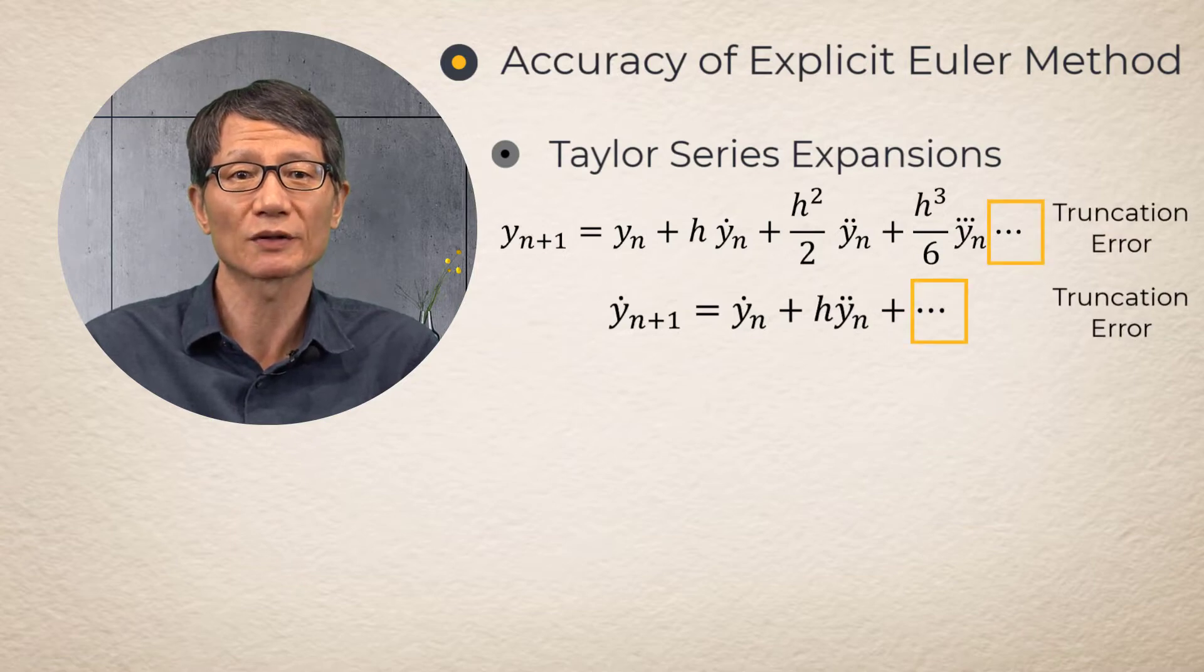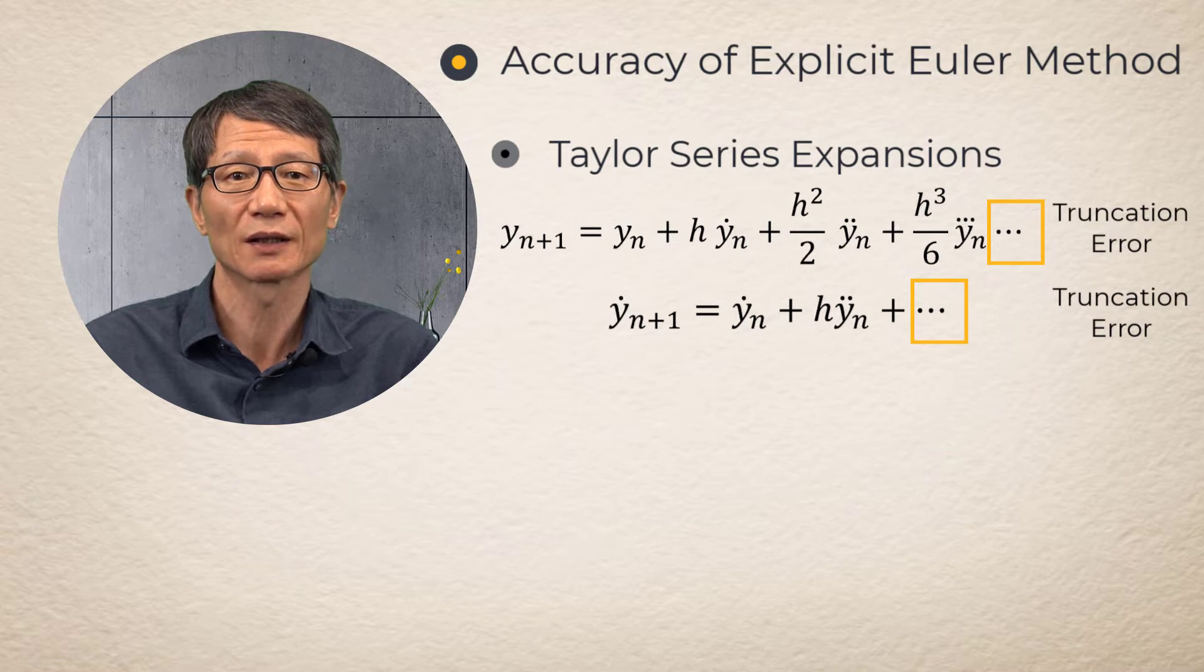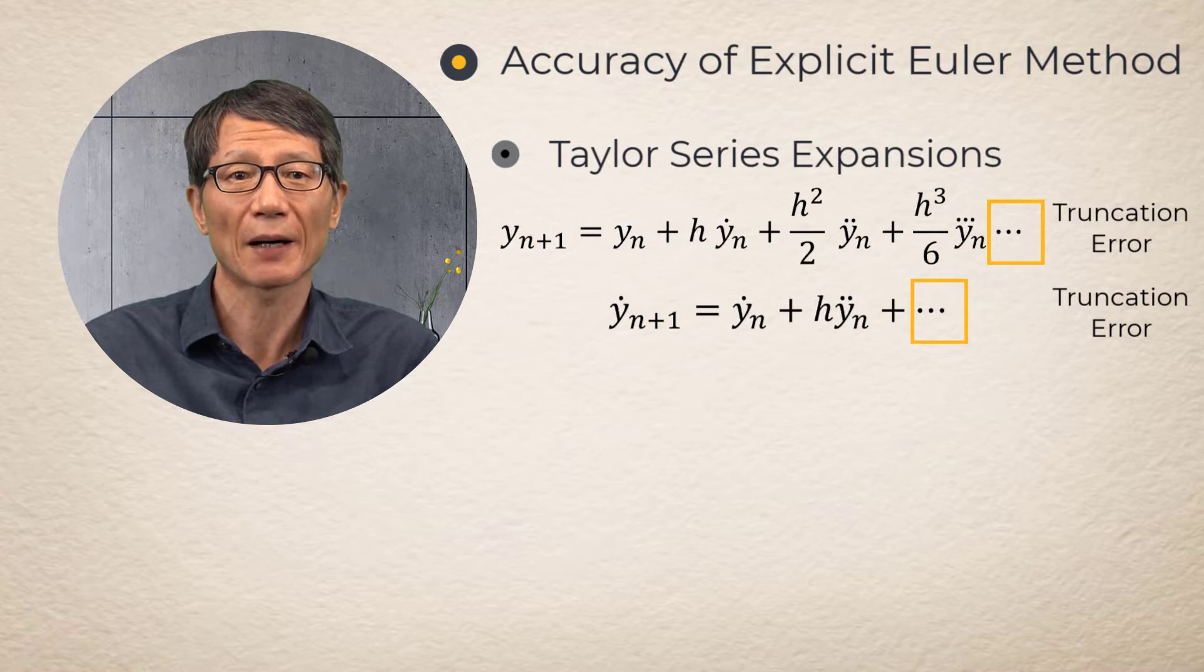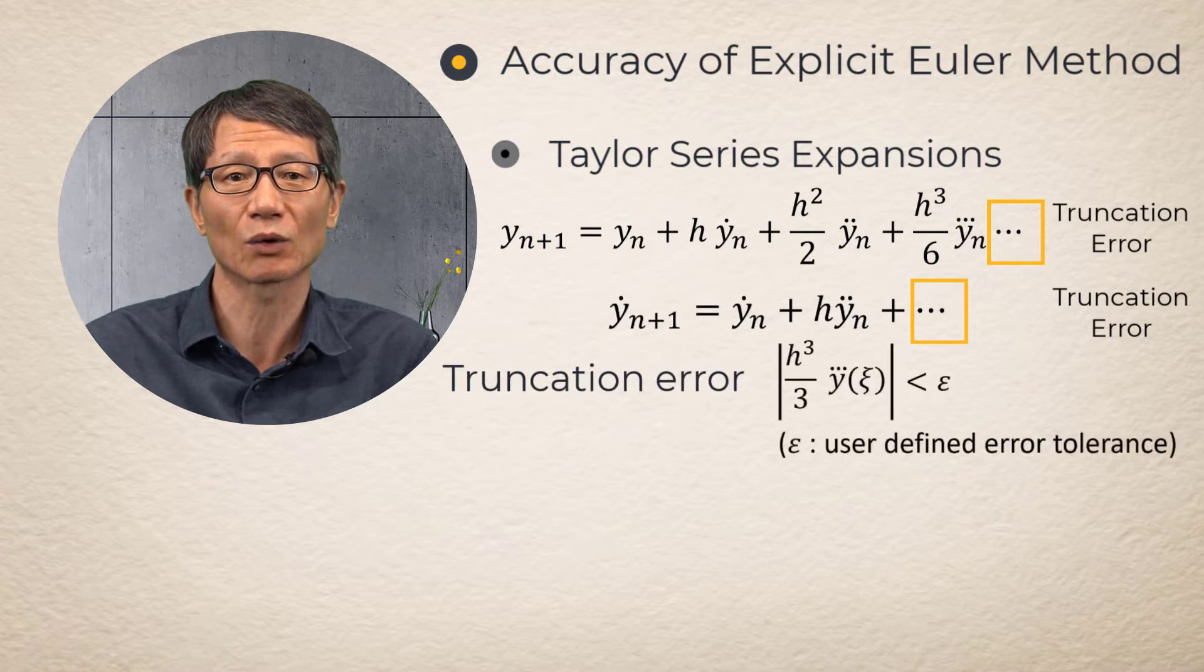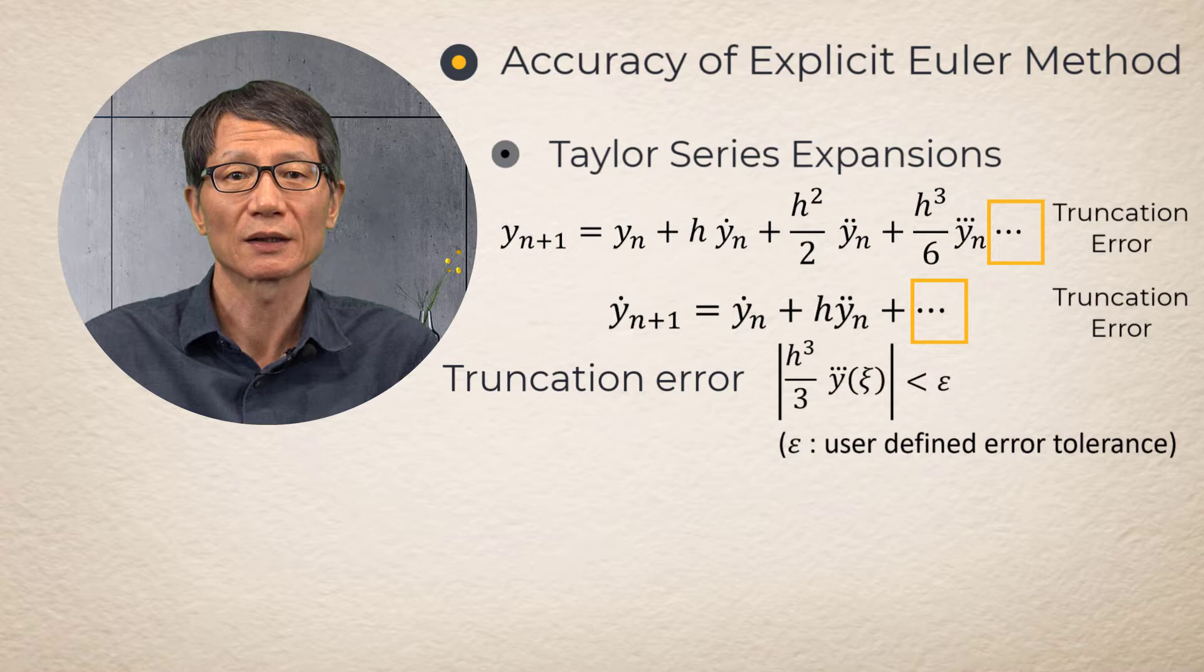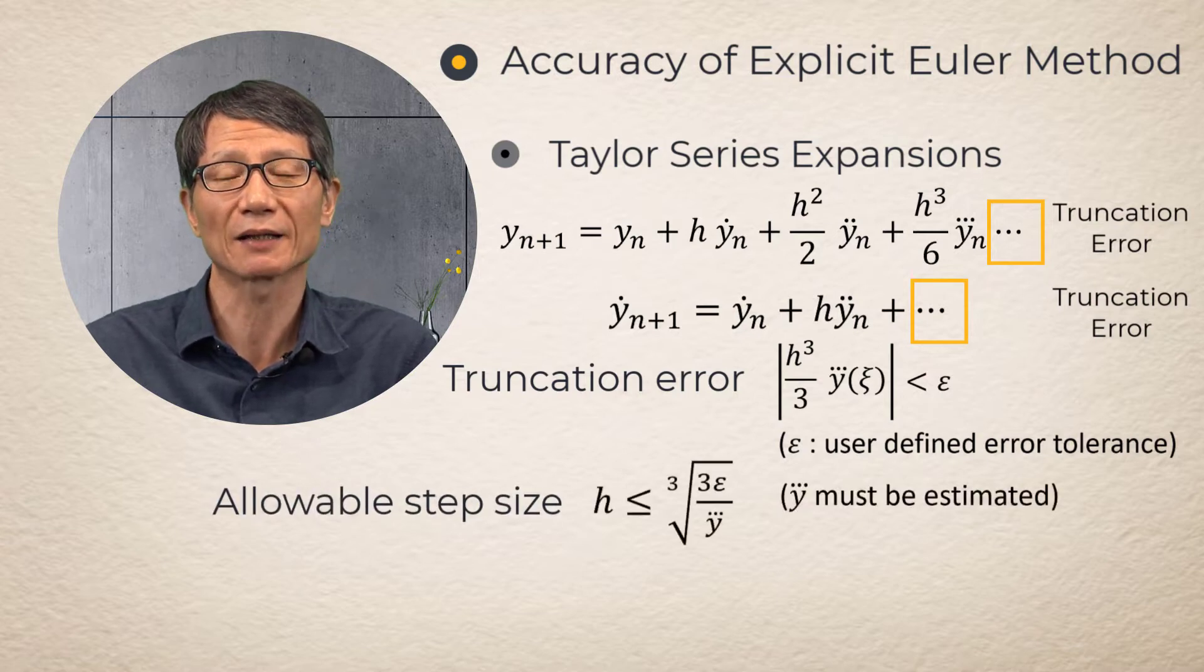Since the magnitude of the third term is much larger than other truncation terms, integration error of the second-order Euler method is approximated by the third-order term. The truncation error must be smaller than a user-specified error tolerance. Therefore, the allowable integration step size can be estimated as follows.